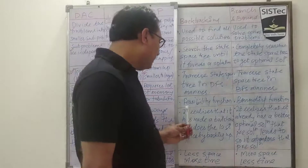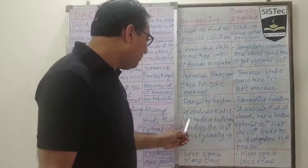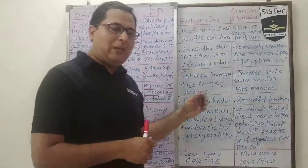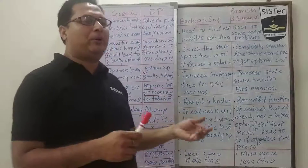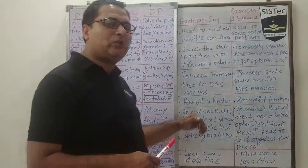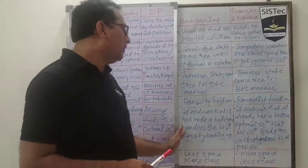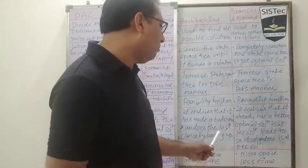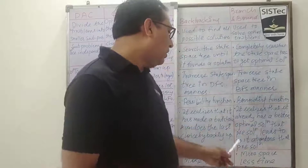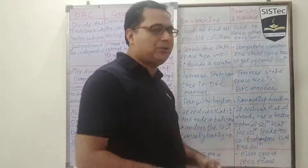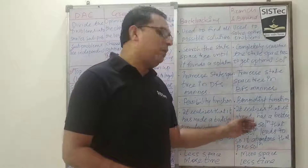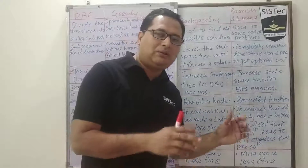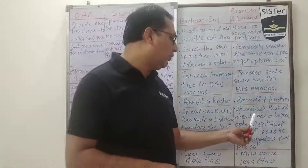In backtracking, if it realizes that it has made a bad choice, it undoes the last choice by backing up. While applying backtracking, when we see that a node is not the proper node or it is not satisfying the constraint, we backtrack to the previous solution. In the case of branch and bound, if it realizes that it already has a better optimal solution than what the current path can lead to, it abandons that path — if generating a new possibility shows it is not better than the previous one, we break that node and do not explore it further.